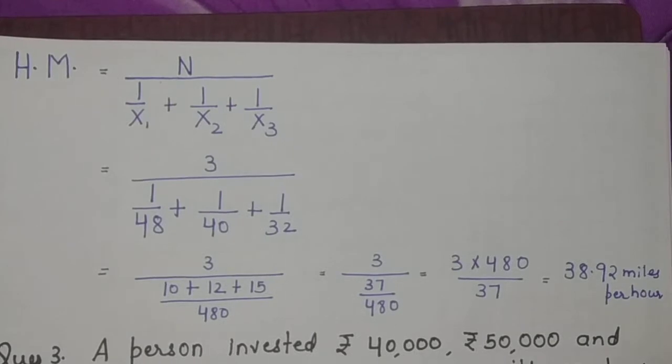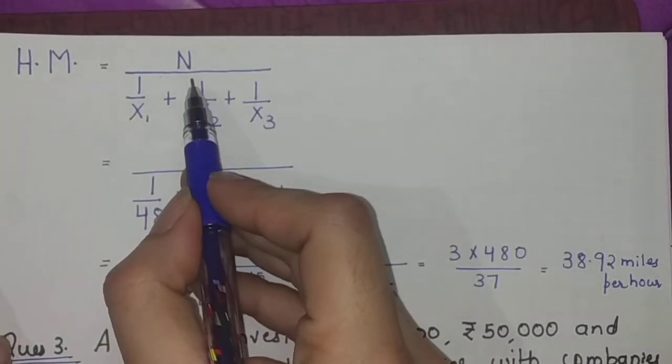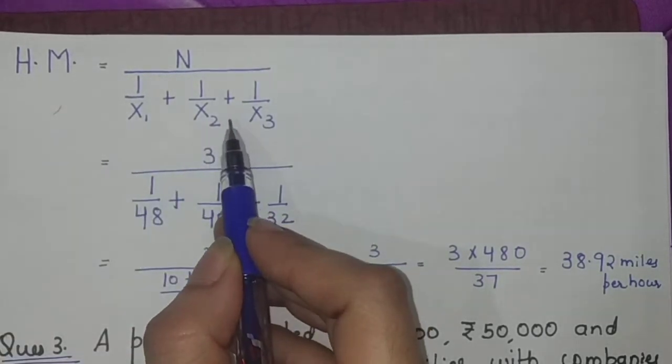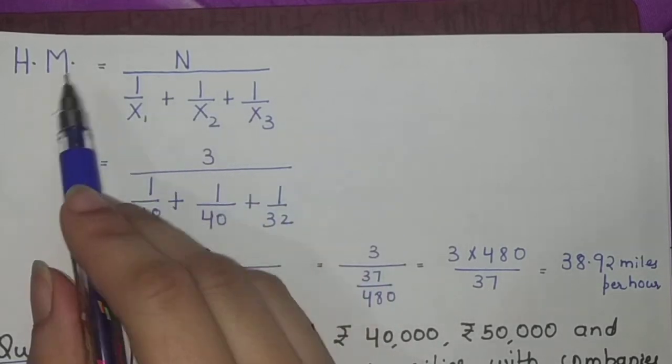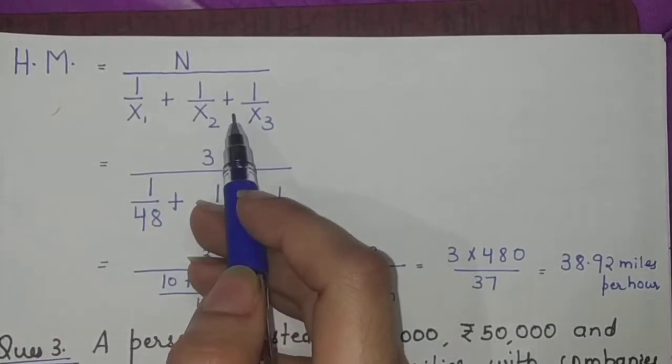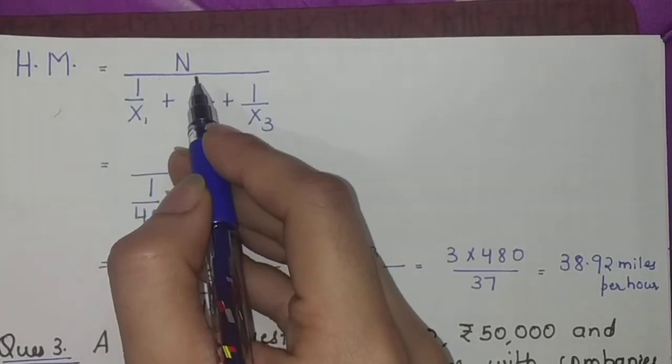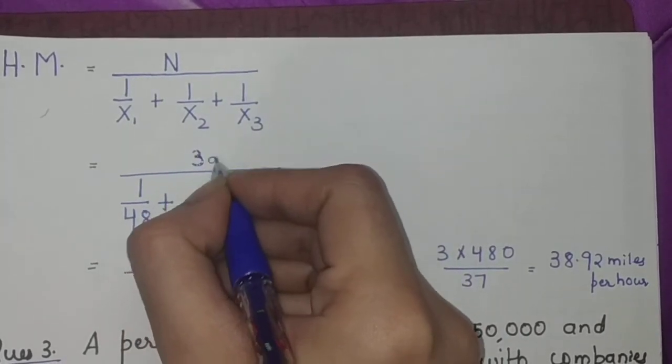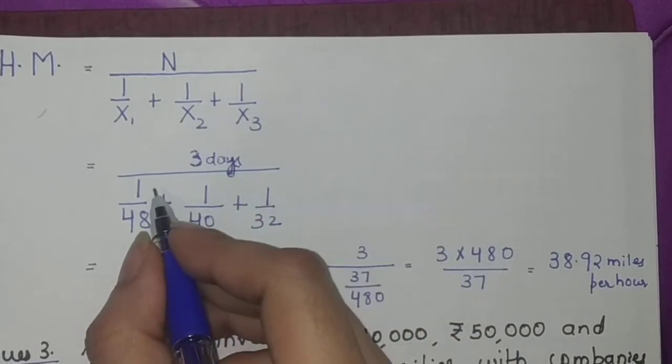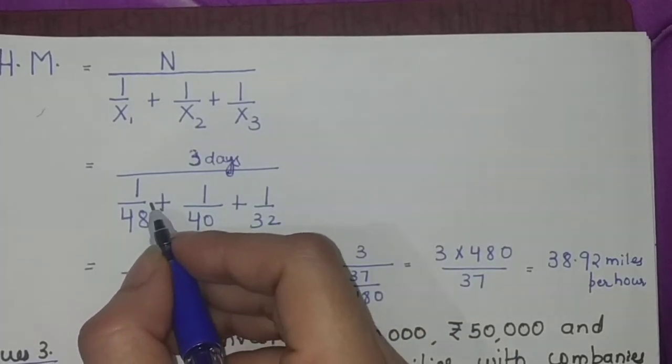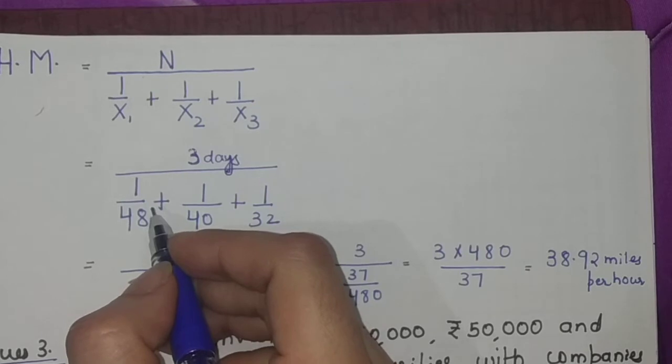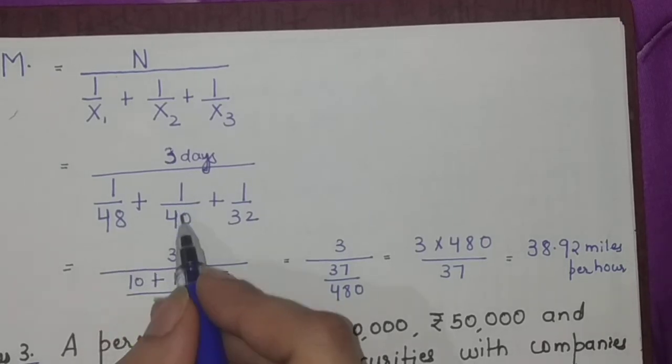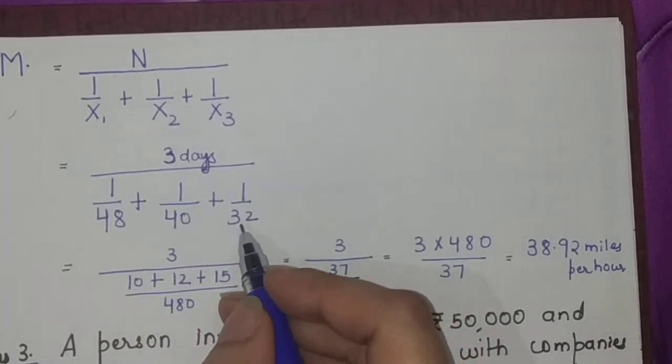The formula for harmonic mean is the reciprocal of arithmetic mean of reciprocals. So n by reciprocals of all the observations. Here n is the sum total of all units - three days. In the denominator I am talking about the variable - speed is the variable, so 1 by 48 for the first day, 1 by 40 for the second day, and 1 by 32 for the third day.